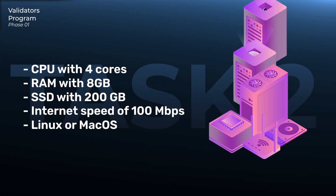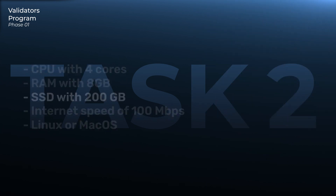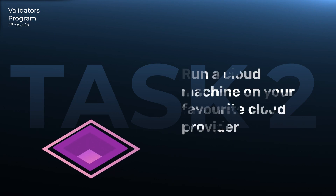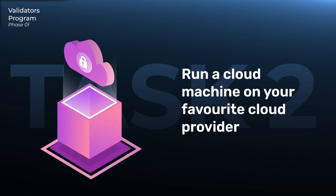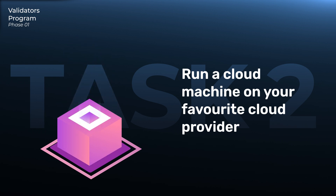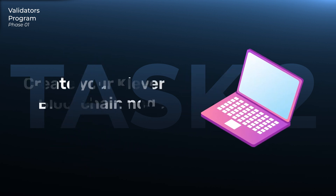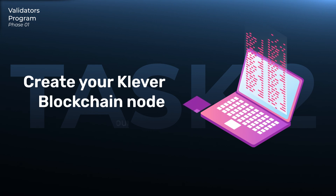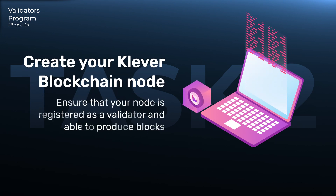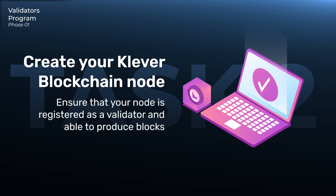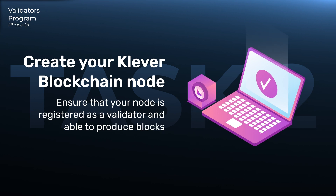This can be physical machines, but it is recommended to run a cloud machine on your favorite cloud provider like AWS, Google Cloud, or Azure to ensure reliable node uptime. Once you have your hardware in place, create your Clever Blockchain node as shown in the documentation at docs.clever.finance.